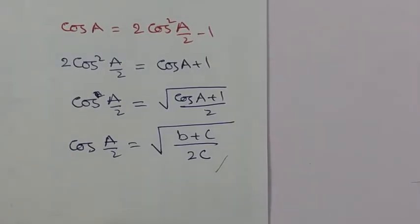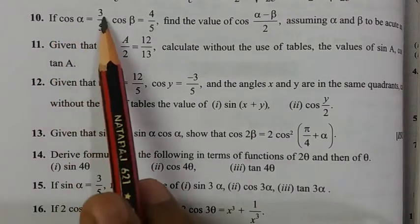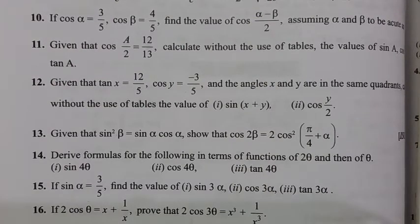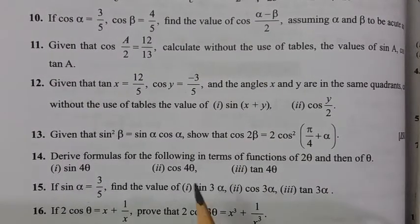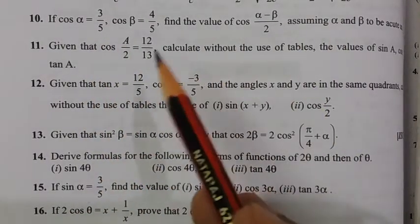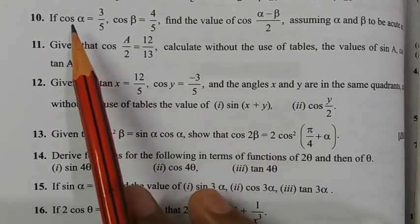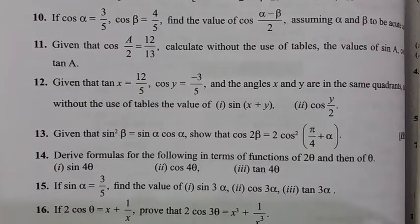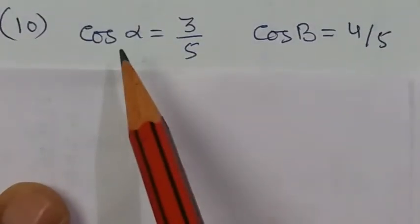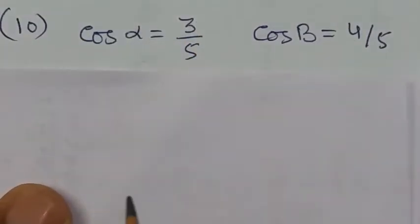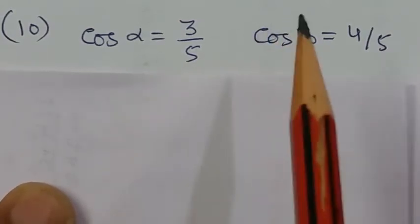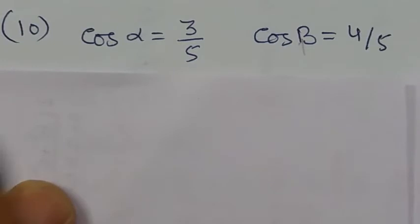So question number 9 was easy — you can do it. Now question number 10: if cos α = 3/5 and cos β = 4/5, find the value of cos((α − β)/2). Assume that α and β are acute angles, meaning they are in the first quadrant, less than 90 degrees, so all trigonometric ratios are positive. There is no need to treat α and β as angles of a single right angle triangle.